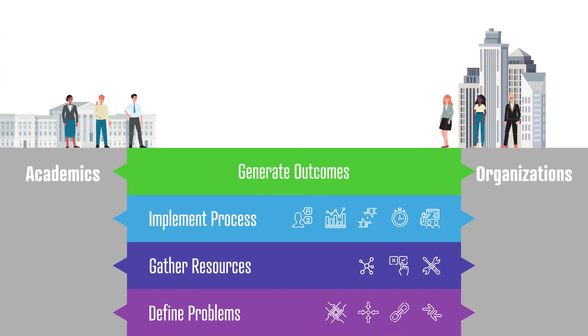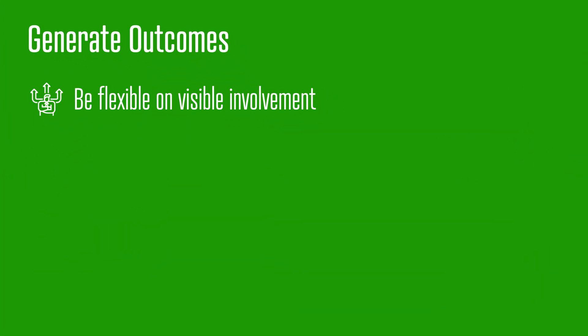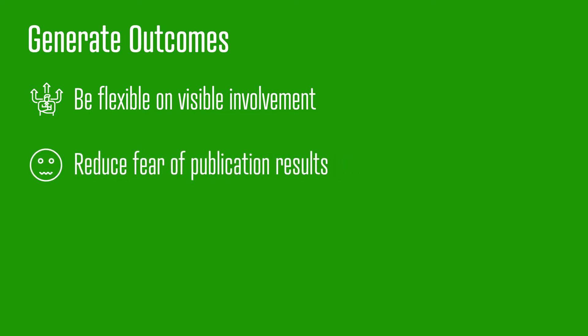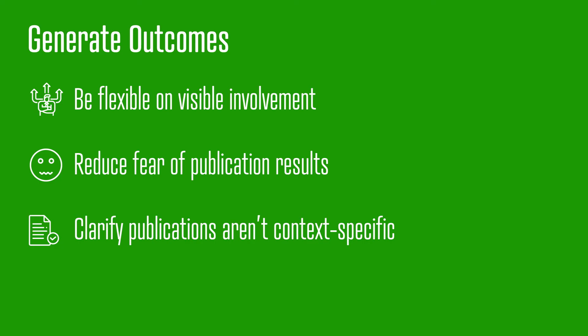Last but not least, with regards to the research outcome, academics should be flexible on the level of visible involvement of the practitioner in the outcome. Some want anonymity, some want exposure. Reduce the fear of the publication of results. Emphasize that it will likely take a long time before findings are published. And clarify that research publications don't contain highly context-specific results, and absolute figures can be avoided if desired.